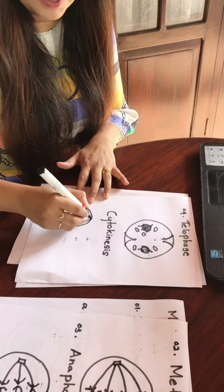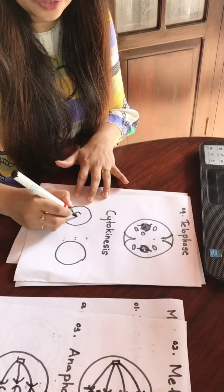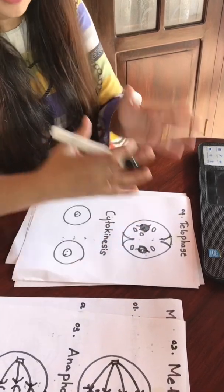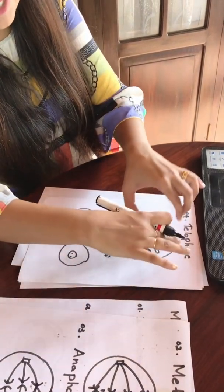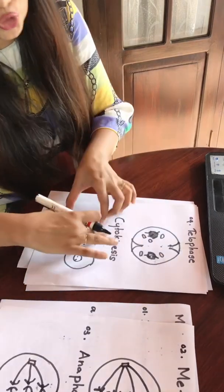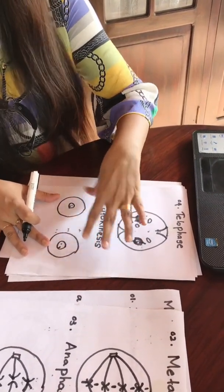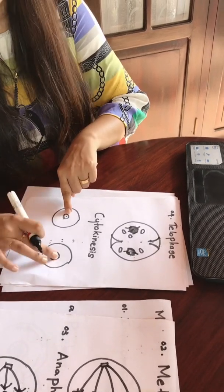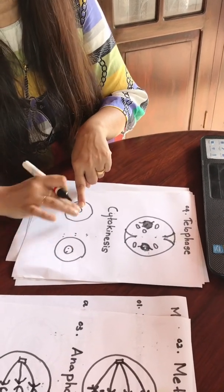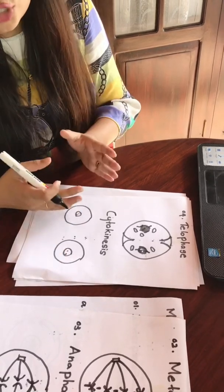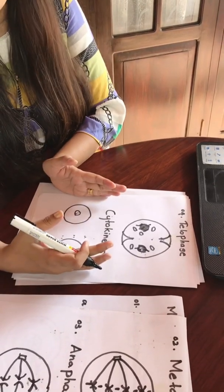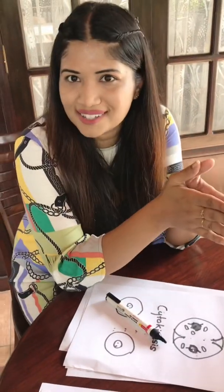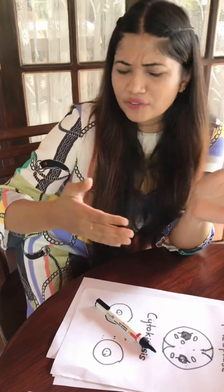The final phase is cytokinesis. Cytokinesis is the complete separation of two cells — the cleavage furrow develops and completely divides the cell into two cells. These two cells each have a nucleus, both nuclei are identical to each other, and each cell has its own separate organelles. This completes the process of mitosis.